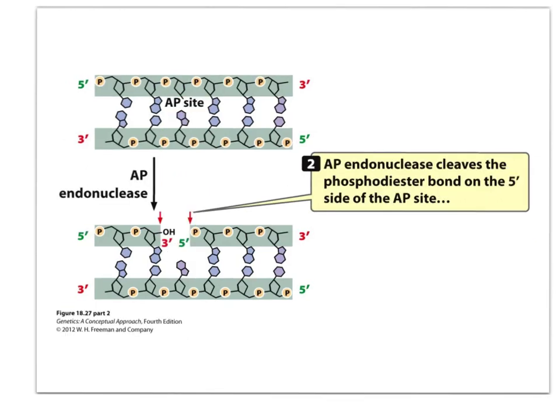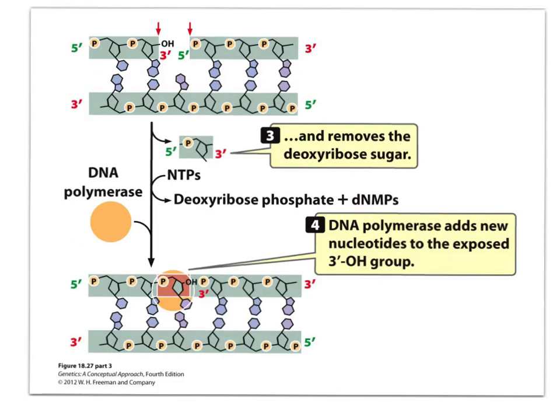This comes out, and then it clips out, breaks the phosphodiester bonds on both sides. So now we have a free 3'OH and a free 5' phosphate.